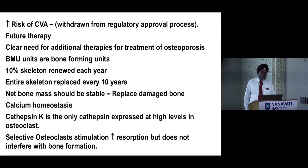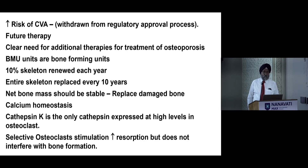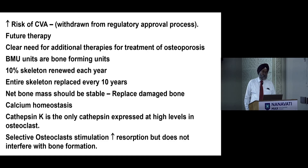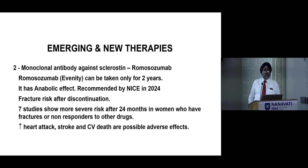There is a clear need for additional therapies in osteoporosis treatment. Bone remodeling units (BMUs) account for 10% of the skeleton being renewed each year, meaning the entire skeleton is replaced every 10 years. Net bone mass should remain stable, damaged bone must be replaced, and calcium homeostasis must be maintained. Cathepsin K is the only cathepsin expressed at high levels in osteoclasts; selective inhibition reduces bone resorption without interfering with bone formation.